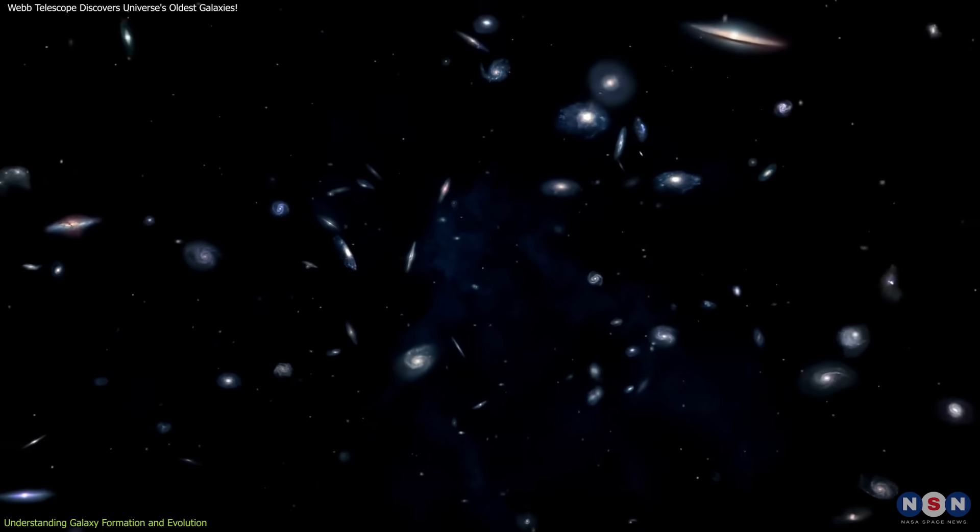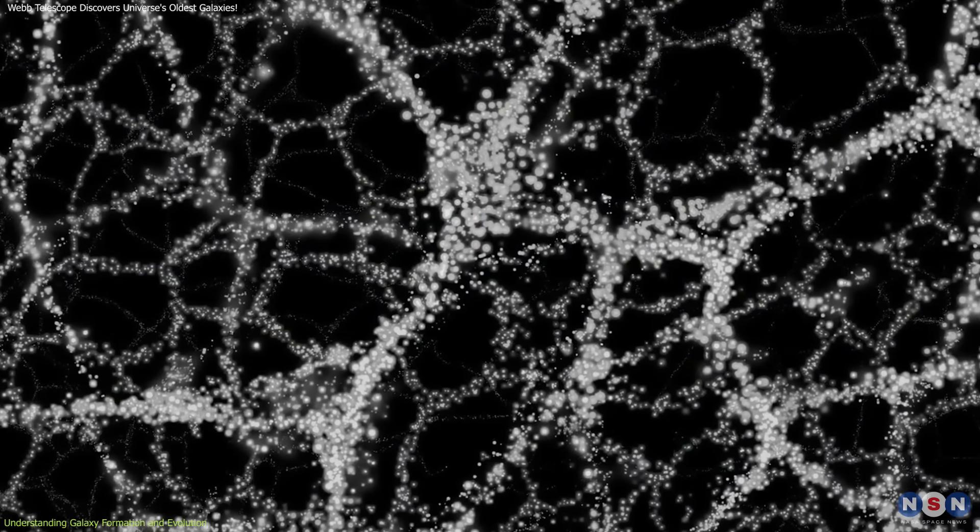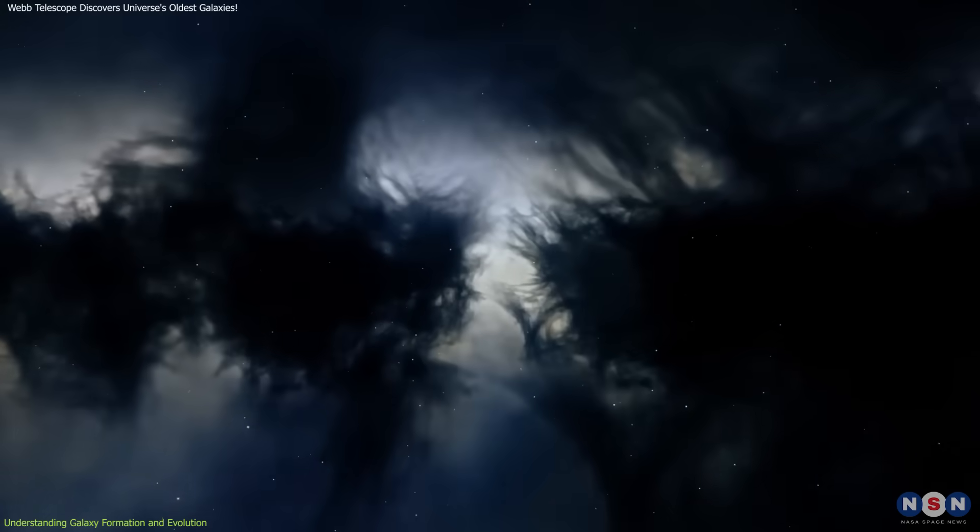By examining the distribution and characteristics of early galaxies, astronomers can infer properties of dark matter, enhancing our understanding of its nature and behavior.